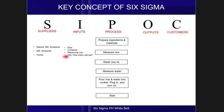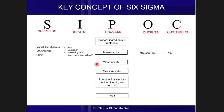When you're done with the suppliers and inputs columns to the left of the process step, the next thing is to go to the right, which is the output column. For the measure rice step, the output is measured rice. We then identify the customers or recipients of that output. Since you're the one cooking and the measured rice is still a work in progress, the customer is you. When done with this process step row, you go down to the next step, which is to wash rice three times.